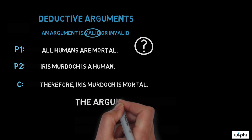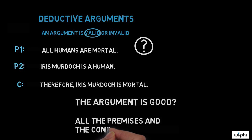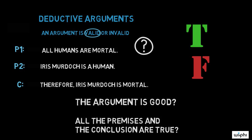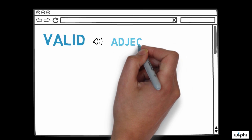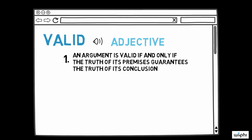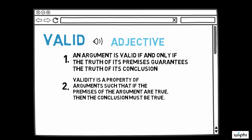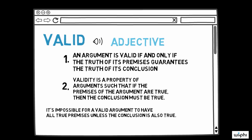Suppose that I say that your argument is valid. Do I mean to say that your argument is good? Do I mean to say that your conclusion or that all of the premises and conclusion are true? While this might sound like what I'm saying, validity has nothing to do with the truth of the conclusion or with how good the argument is in general. So let's define it. An argument is valid if and only if the truth of its premises guarantees the truth of its conclusion. That is, validity is a property of arguments such that if the premises of the arguments are true, then the conclusion must be true.